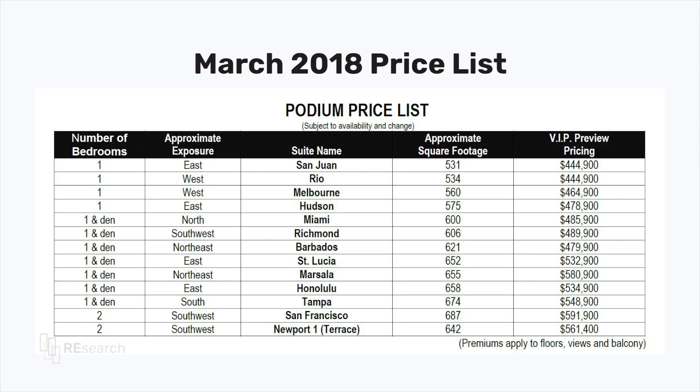Depending on the size and height of the development you're buying into, the developer will continue to sell units throughout construction. They only need to achieve a certain threshold of units sold to secure financing before construction begins. What you can do is email the developer's sales team or get in touch with your agent and ask for an updated price list of the units they have on sale later during construction. This gives you the changes in price per square foot over time. It's important to always date the price list so you know the difference as a function of time — for example, here is the price list from when I purchased my first unit in March 2018.